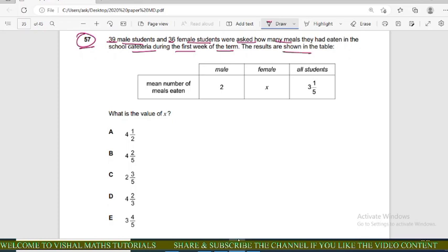The results are shown in table: mean number of meals eaten by males is 2, by females is x, and all students is 3 1/5. In this question we have to find out the value of x.